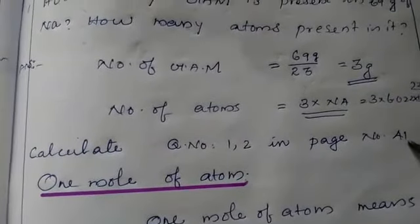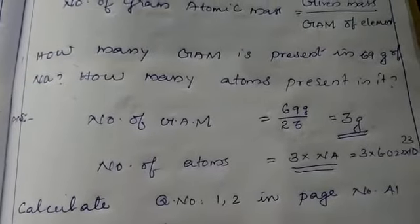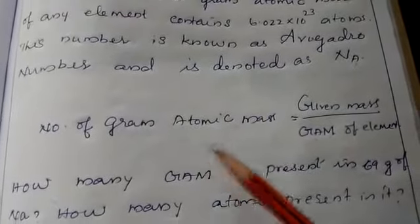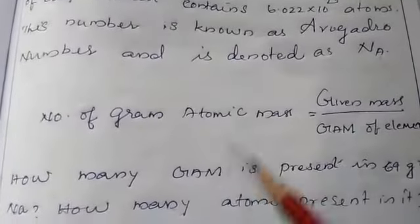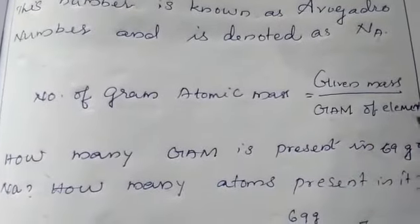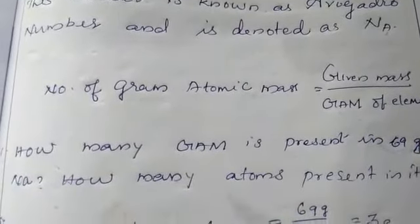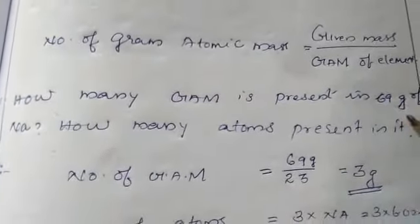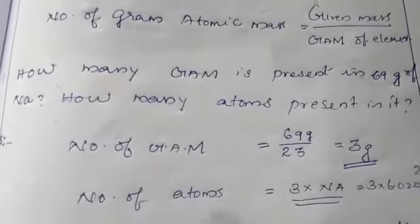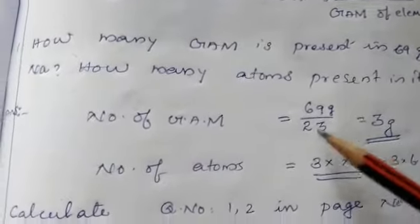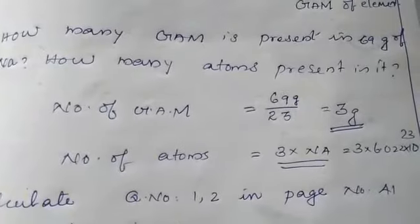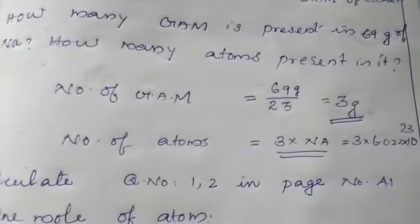Page number 41 — you have to do those problems on your own. Once again: to calculate the gram atomic mass of a given element, use given mass ÷ GAM of the element. For sodium, given mass is 69 g and atomic mass is 23, so 69 ÷ 23 = 3 GAM.